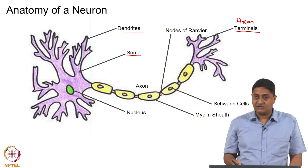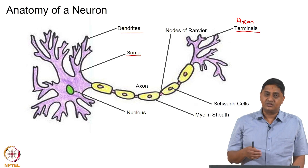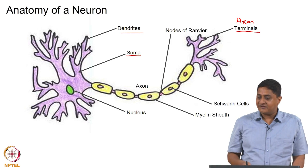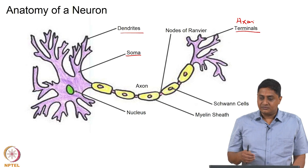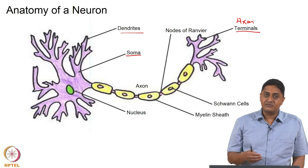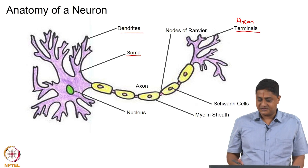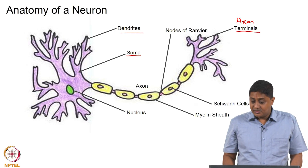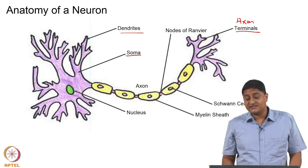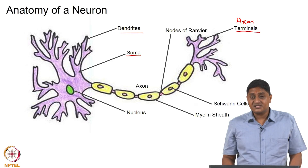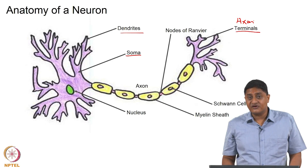Both neurons and muscle fibers have similar characteristics in terms of having a sodium-potassium pump, and an influx of sodium causing an action potential. So if the neuron connects to a muscle fiber, it not only causes an action potential in the muscle fiber, but it also causes the muscle fiber to contract or produce force.